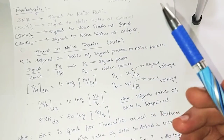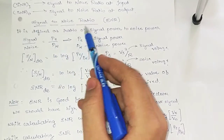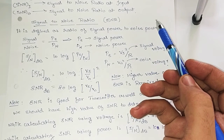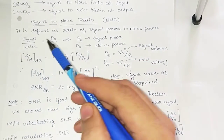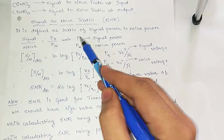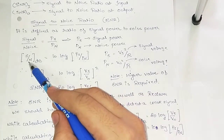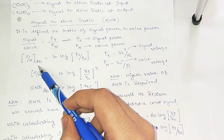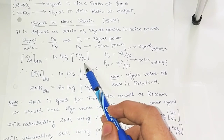Now we will see about signal to noise ratio. SNR is defined as the ratio of the signal power to the noise power — PS upon PN. PS is signal power and PN is noise power. If I want to express this term in decibels, then the formula will be 10 log (PS / PN). PS is the power of the signal and PN is the power of the noise.